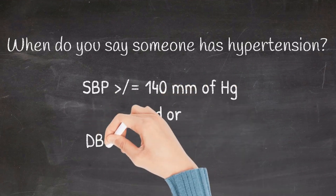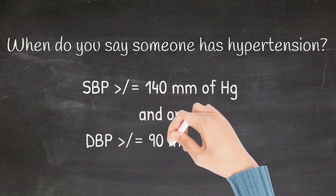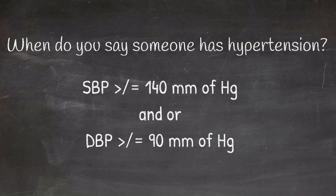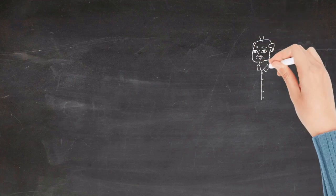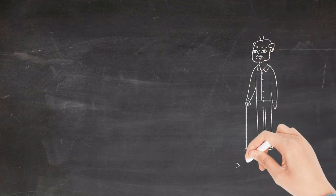When the systolic BP is more than or equal to 140 millimeter of mercury and/or the diastolic BP is more than or equal to 90 millimeter of mercury. Based on the JNC 8 guidelines, for people who are more than or equal to 60 years of age, the treatment should be started only when the BP is more than or equal to 150 by 90 millimeter of mercury.